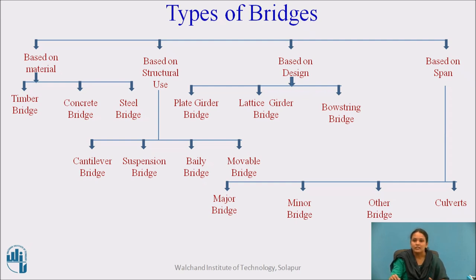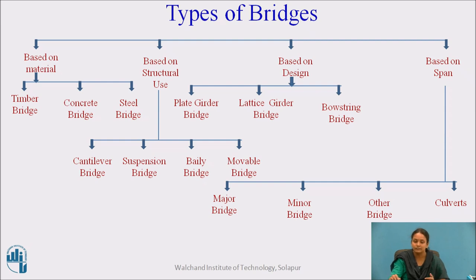Based on span, bridges are classified as: major bridge, where the span is more than 45 meters; minor bridge, where span is 30 to 45 meters; other bridges, constructed for spans less than 30 meters; and culverts, constructed for spans of up to 6 meters. This is the overall classification of bridges.